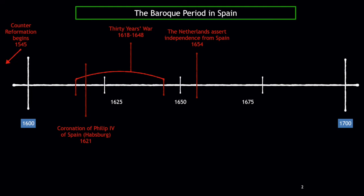In Spain, the Counter-Reformation is on the timeline — that's the Church's reaction to the Reformation. The Thirty Years' War is there too, mostly because the Spanish were heavily involved. I also have the coronation of Philip IV of Spain, a very important patron of the arts, and the Netherlands asserting their independence from Spain. Some of you might not know this, but the Netherlands were once part of Spain under the Spanish Habsburg kings Philip III, Philip IV, and Charles II.